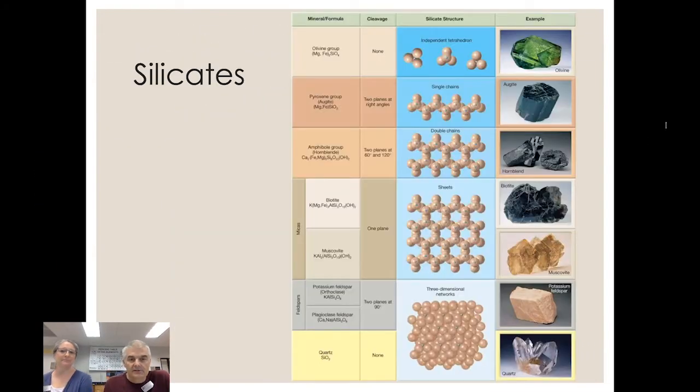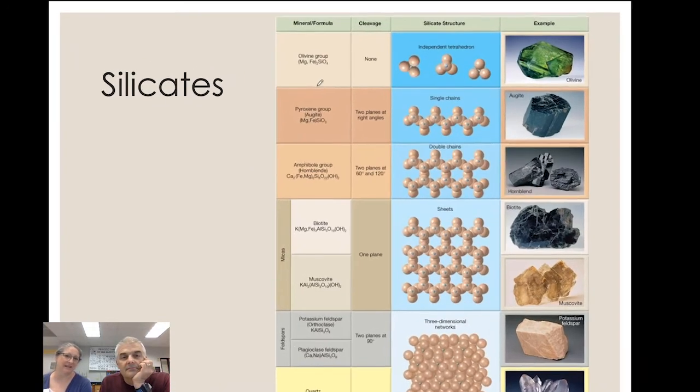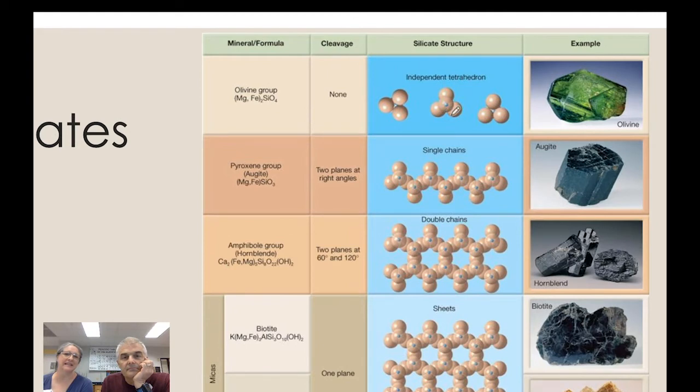They've got double chains and sheets and what the heck is all this? Well, you know, with Legos, you can make all kinds of different shapes. Yeah. With the silicate ion, you can make all kinds of different. But you're always starting with the tetrahedron. Yes. And then I can rearrange it in different ways and I can make these. So like, are these all the same chemicals or what's the difference?